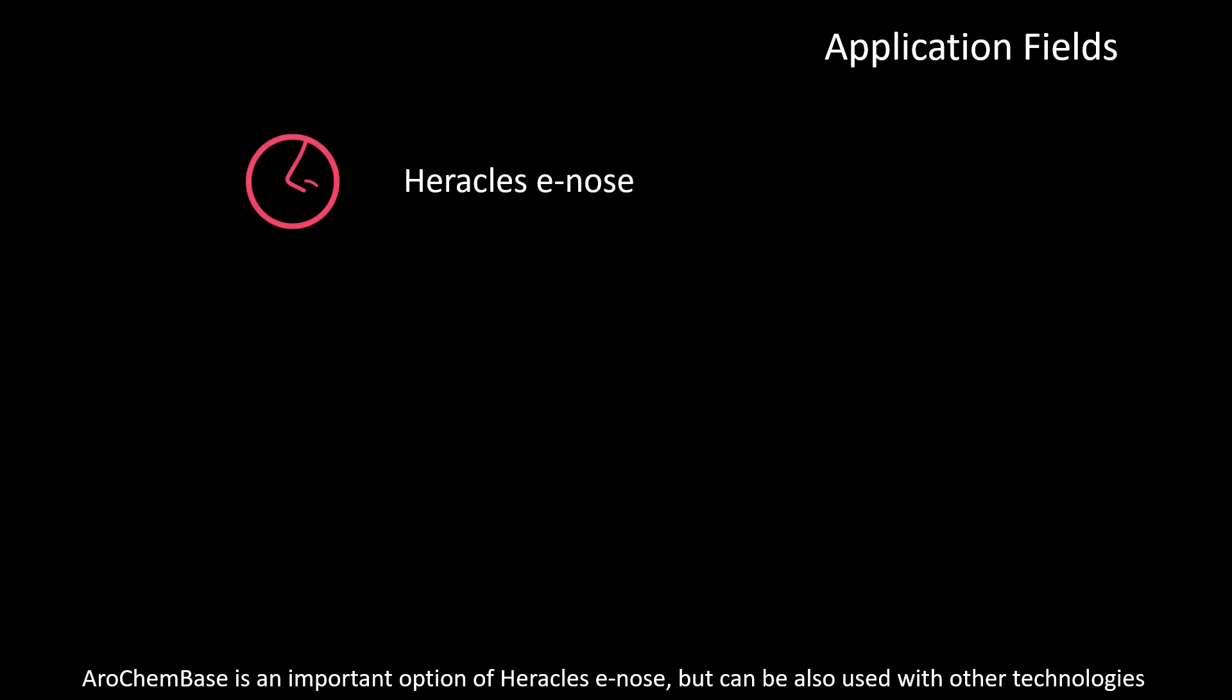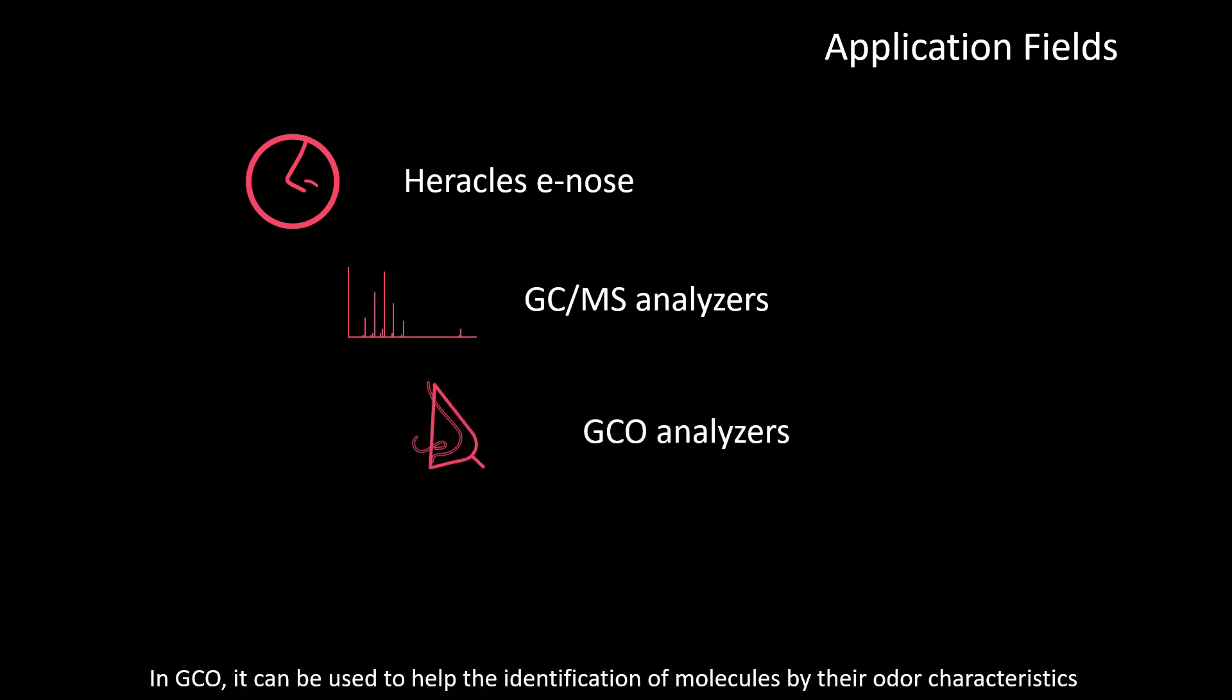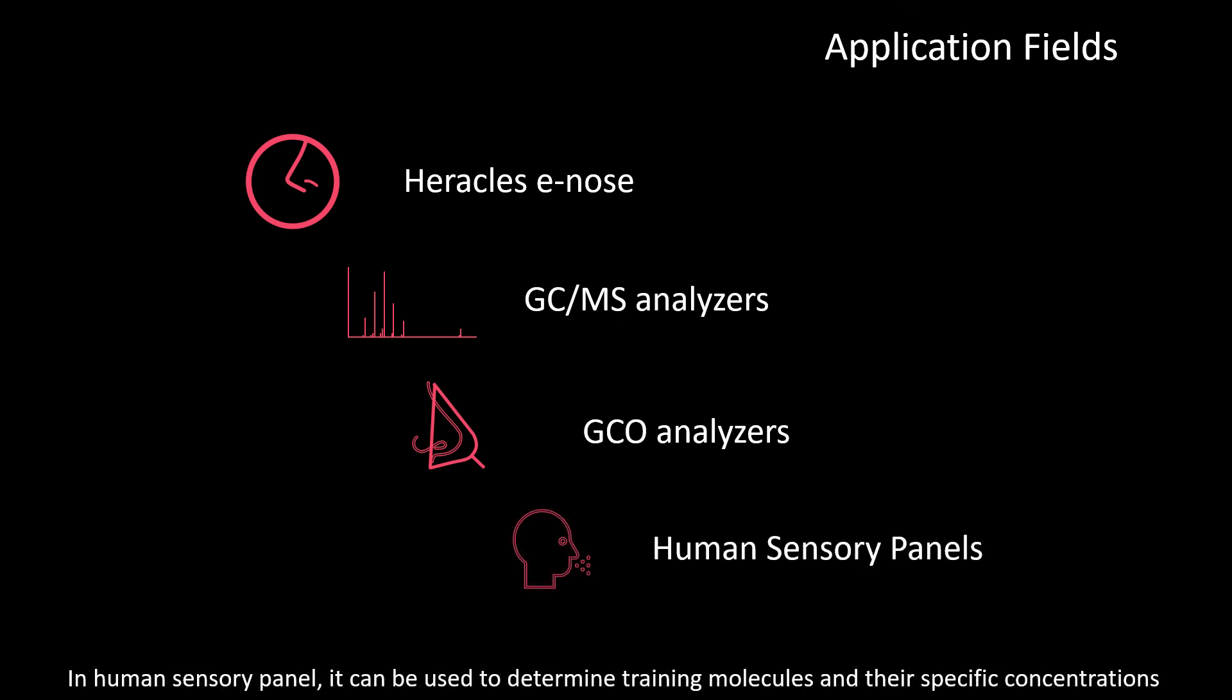AroChemBase is an important option of AroChemis Enos, but can also be used with other technologies. In GCAMS, it can resolve uncertain spectrum identification and add odor and threshold information. In GCO, it can be used to help the identification of molecules by their odor characteristic. In Human Sensory Panel, it can be used to determine training molecules and their specific concentrations.